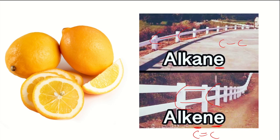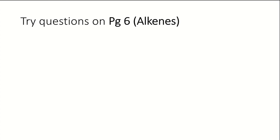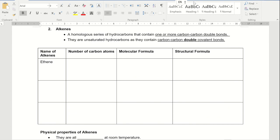Refer to page six of your notes. We will draw the different alkene compounds — name, number of carbon atoms, and so forth. The key feature to highlight is the carbon-carbon double bond. Alkenes are called unsaturated hydrocarbons because of this C-C double bond.